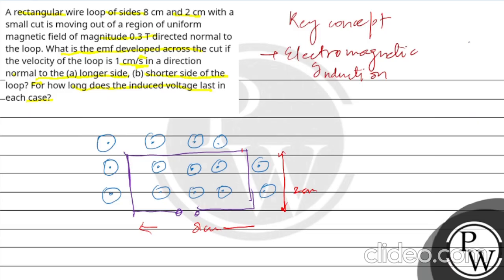When the loop moves normal to the longer side, it will travel a distance equal to the width — that is, 2 centimeter — before it completely exits the magnetic field. The EMF is generated due to the change in flux as the loop exits the field region.